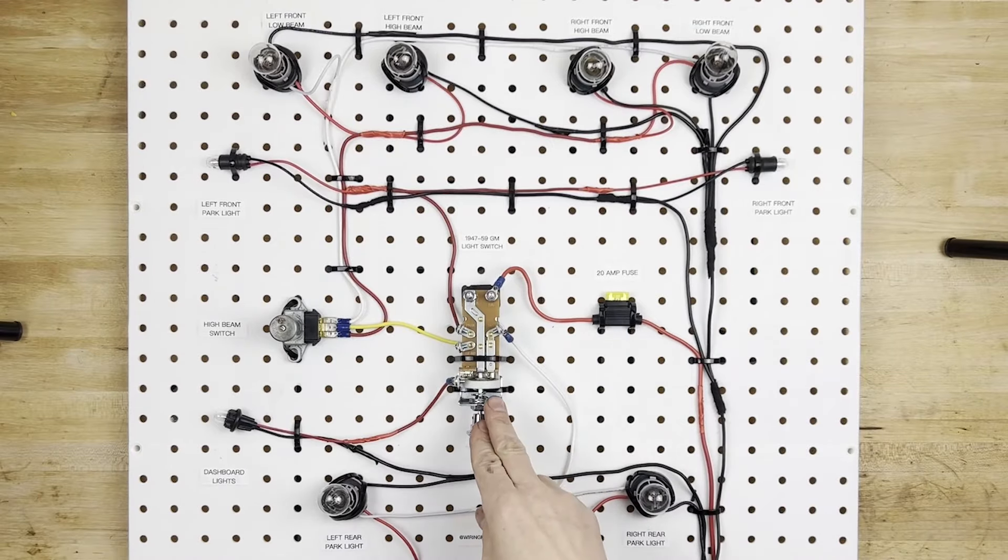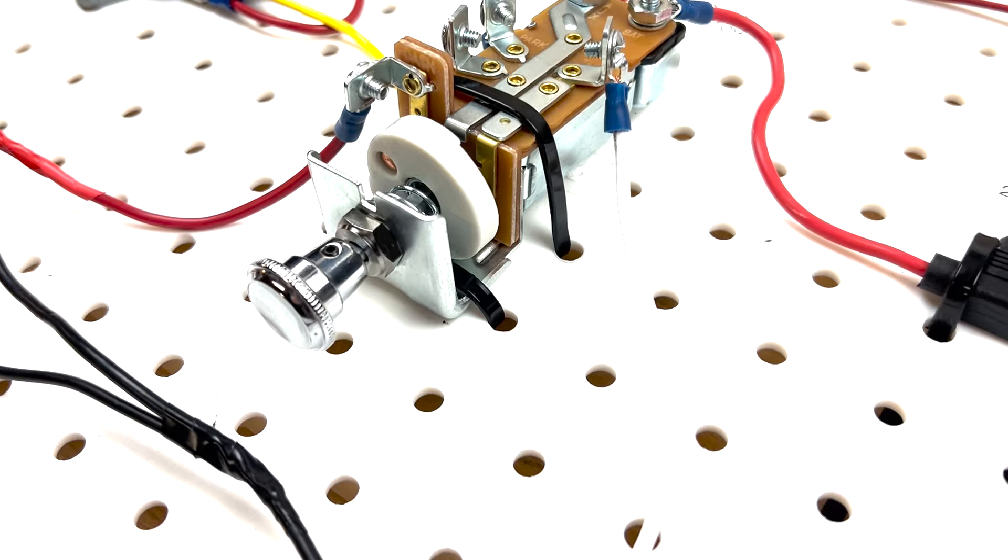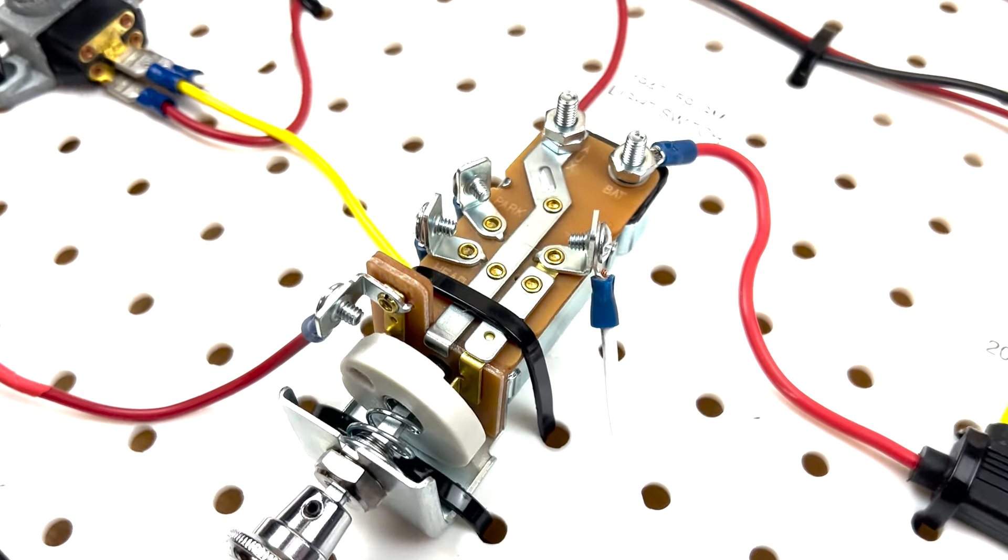Here we have a push-pull style headlight switch, which is correct for a 47-59 GM truck, but you can really use it in any kind of car you want.